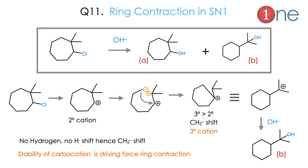Next: ring contraction. If ring expansion is possible, in some cases ring contraction is also possible. The alkyl halide given has two possibilities — a straightforward OH⁻ attack giving product A, or a rearranged ring-contracted product B. B is the major product because of cation stability. Step one: cation formation. The secondary cation is less stable than tertiary, so the ring contracts to form a tertiary cation, equivalent to a six-membered ring with an isopropyl group outside. OH⁻ attacks to give product B as the major product.